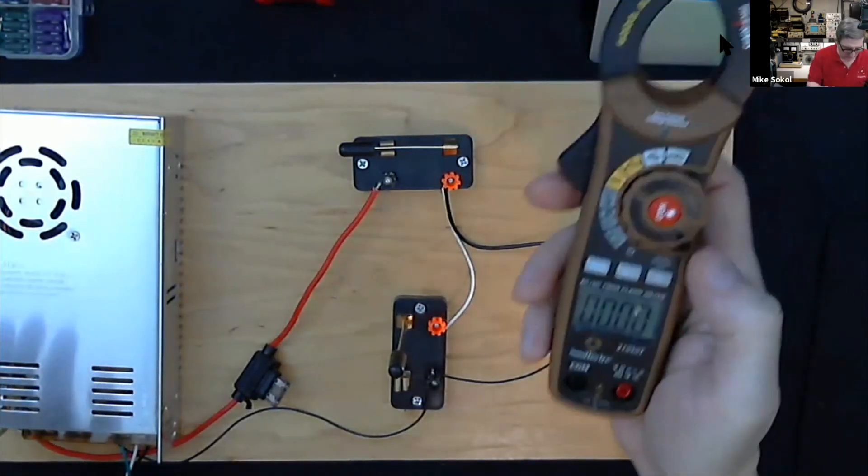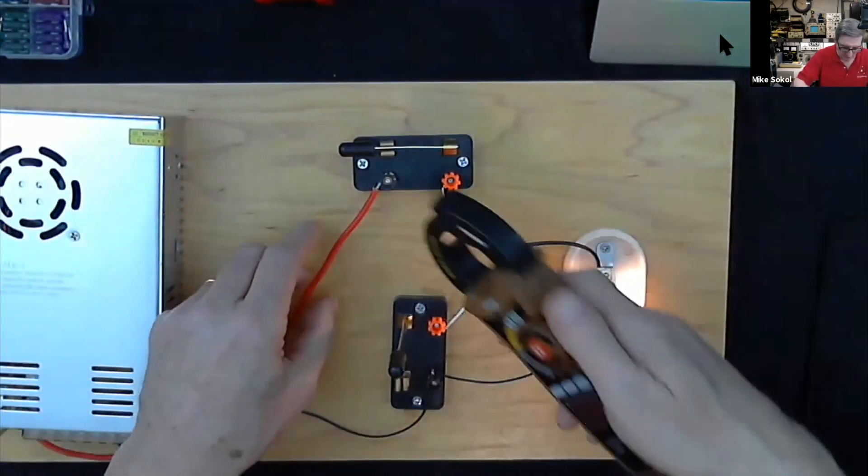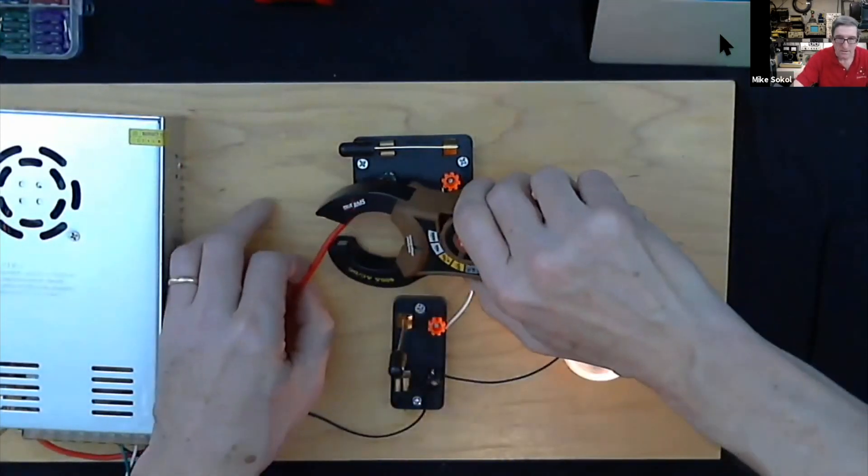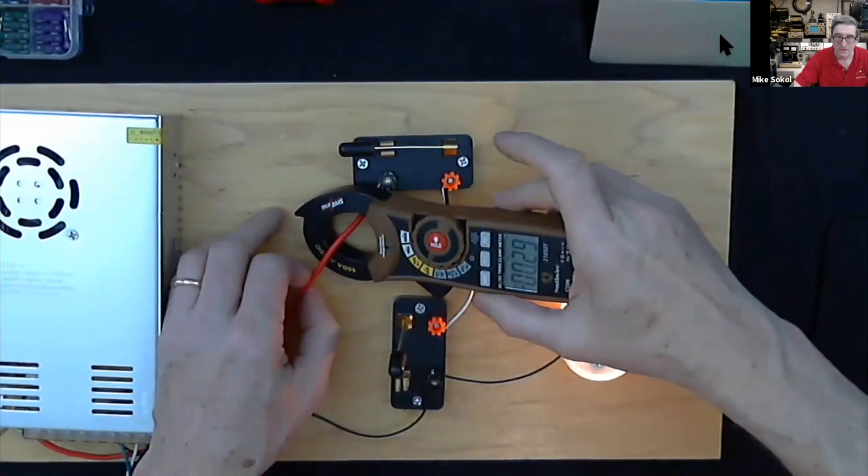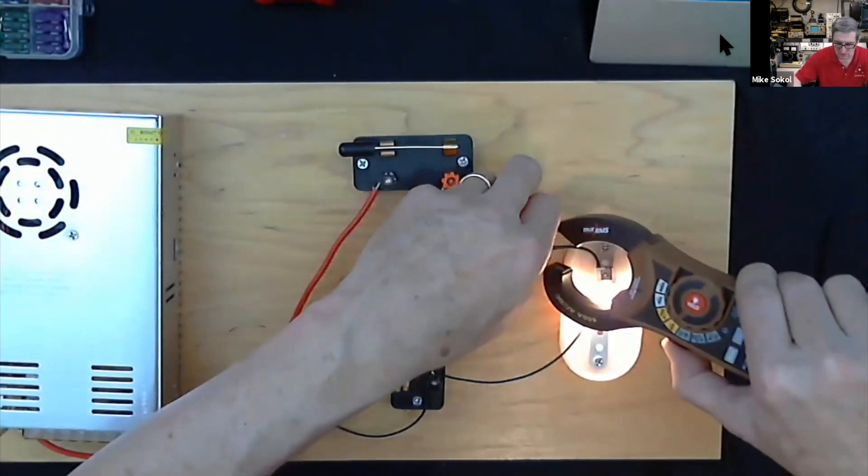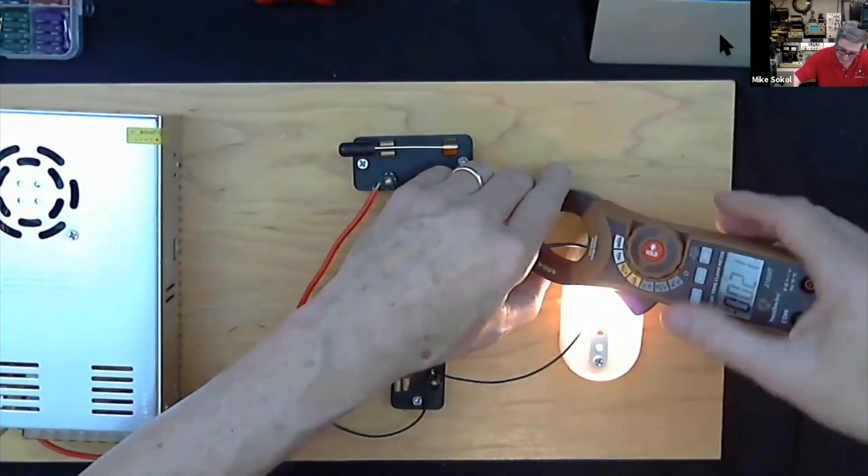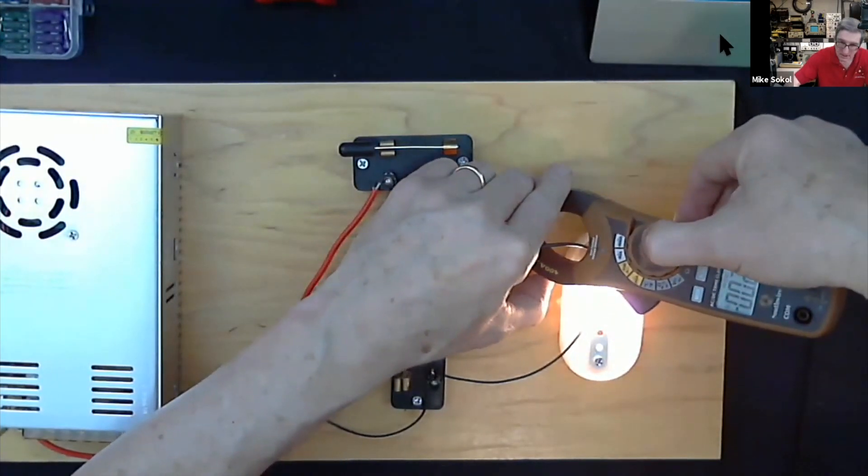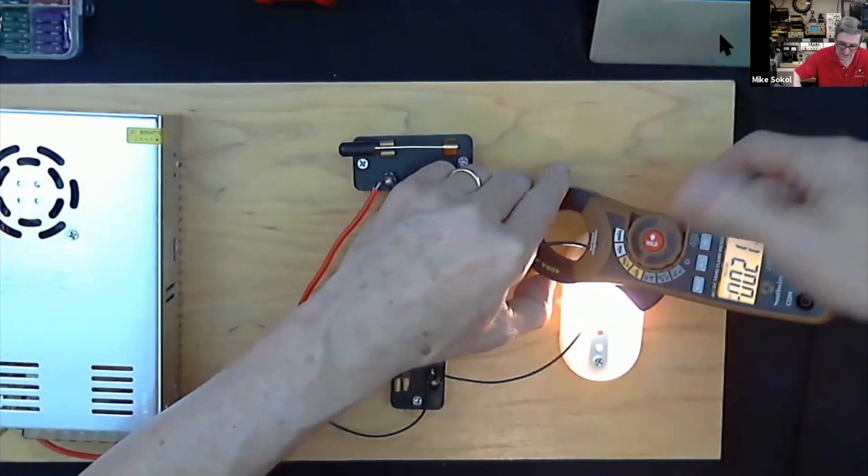We're going to zero this out and we're going to see that we have about a quarter of an amp flowing through there. We can predict we'll have a quarter of an amp or so flowing through here. You can see about two-tenths of an amp here.